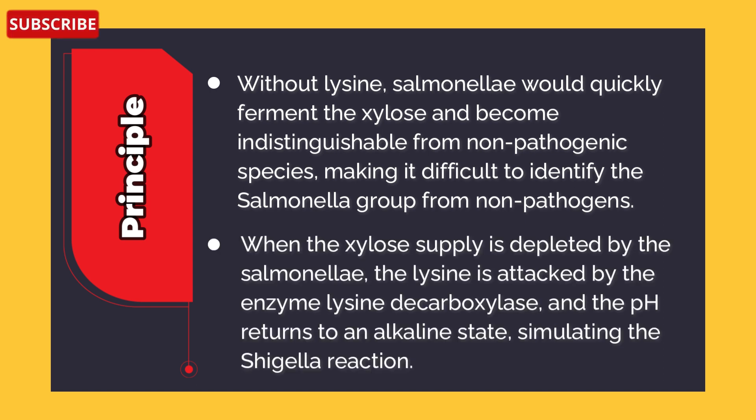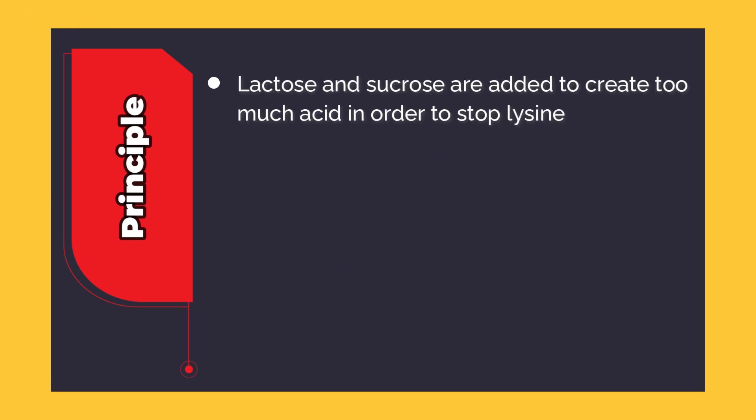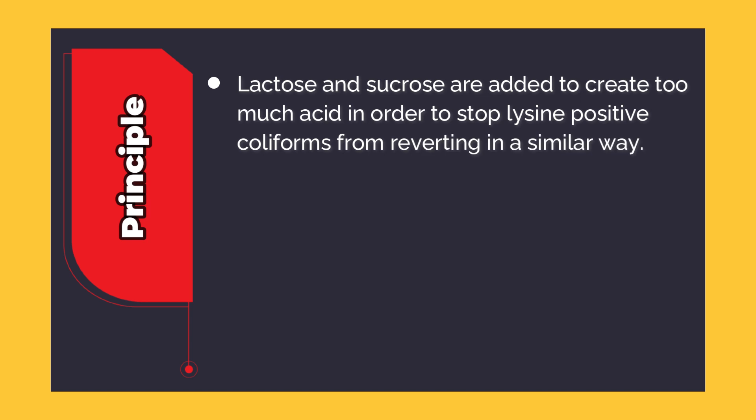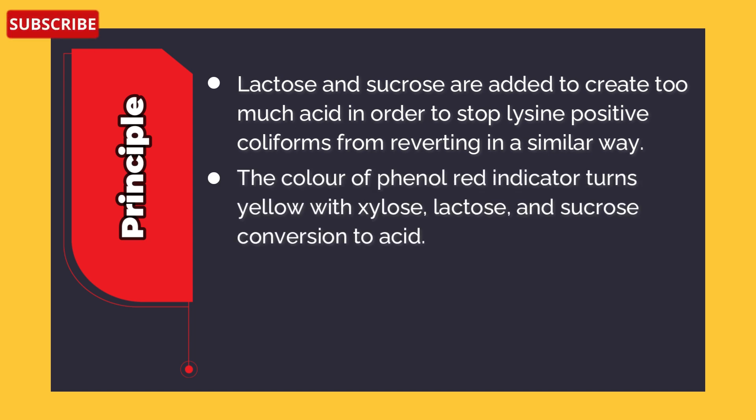When the xylose supply is depleted by Salmonella, lysine is attacked by the enzyme lysine decarboxylase and the pH returns to an alkaline state, simulating the Shigella reaction. Lactose and sucrose are added to create excess acid in order to stop lysine-positive coliforms from reverting in a similar way. The phenol red indicator turns yellow with xylose, lactose, and sucrose conversion to acid.